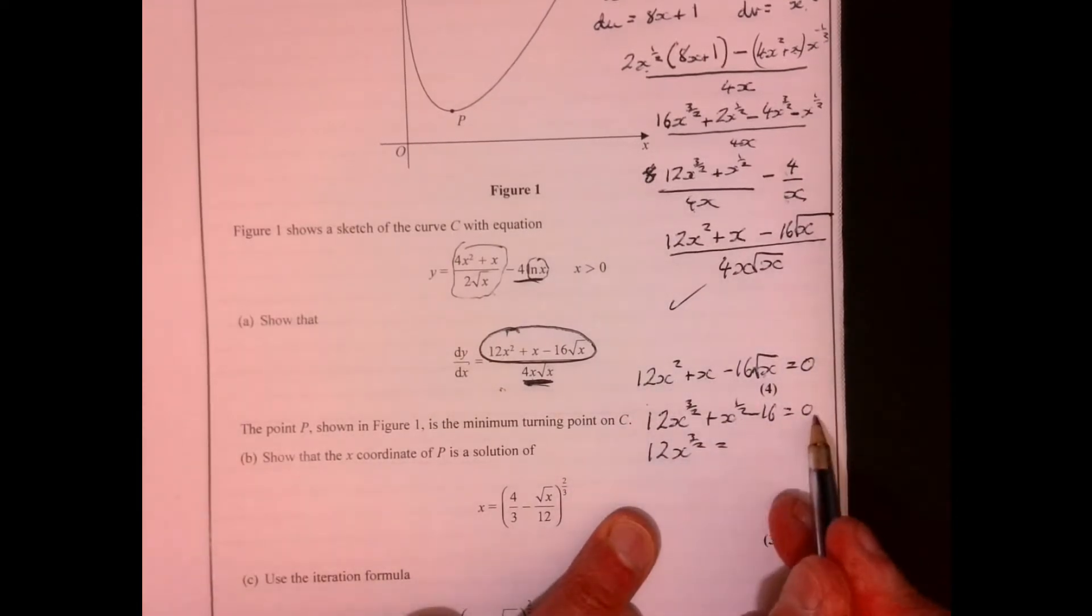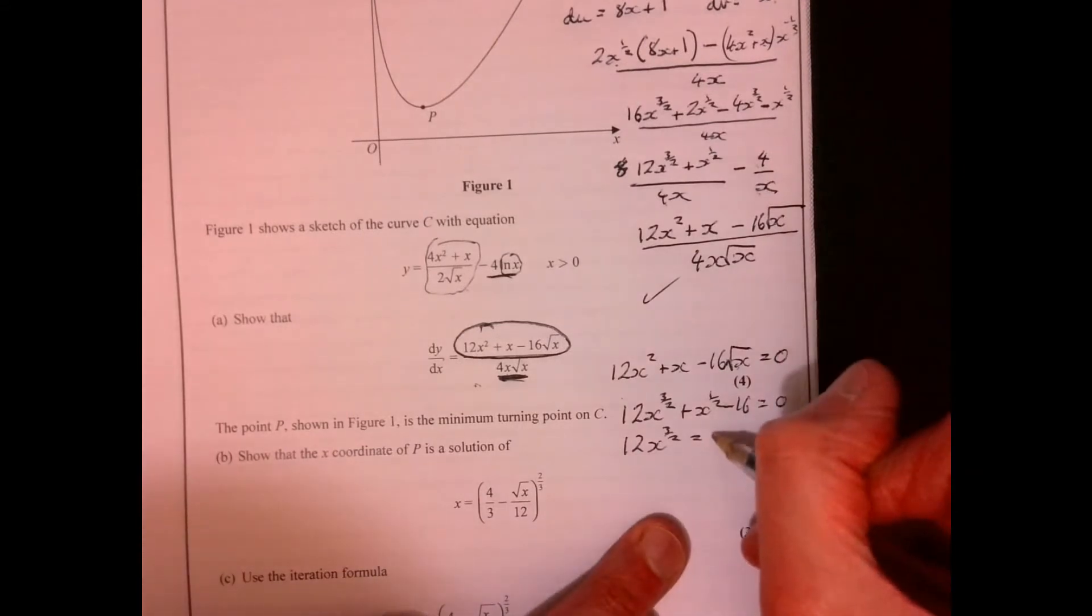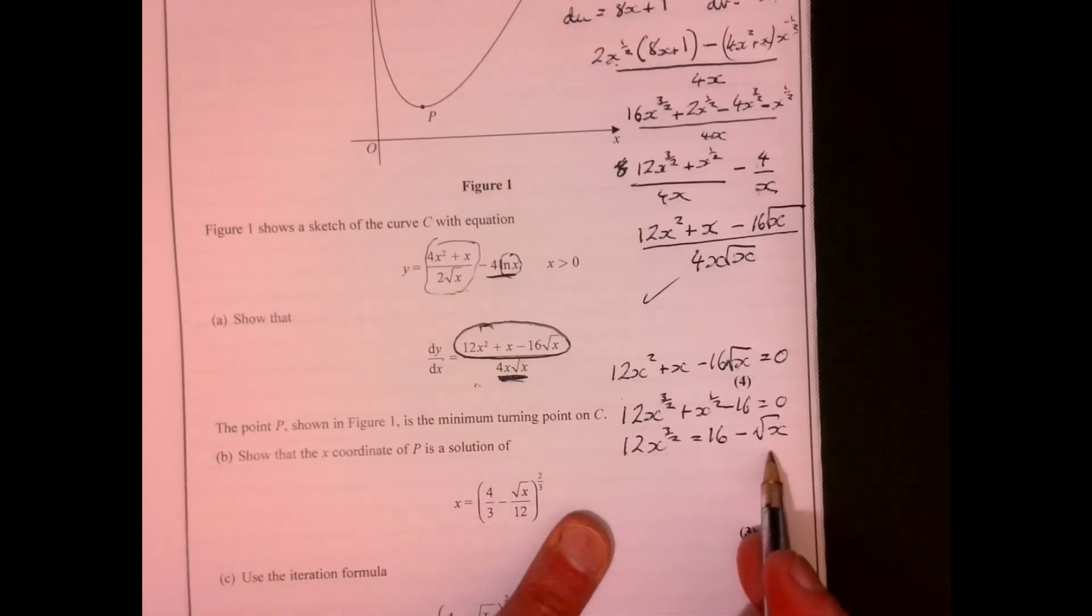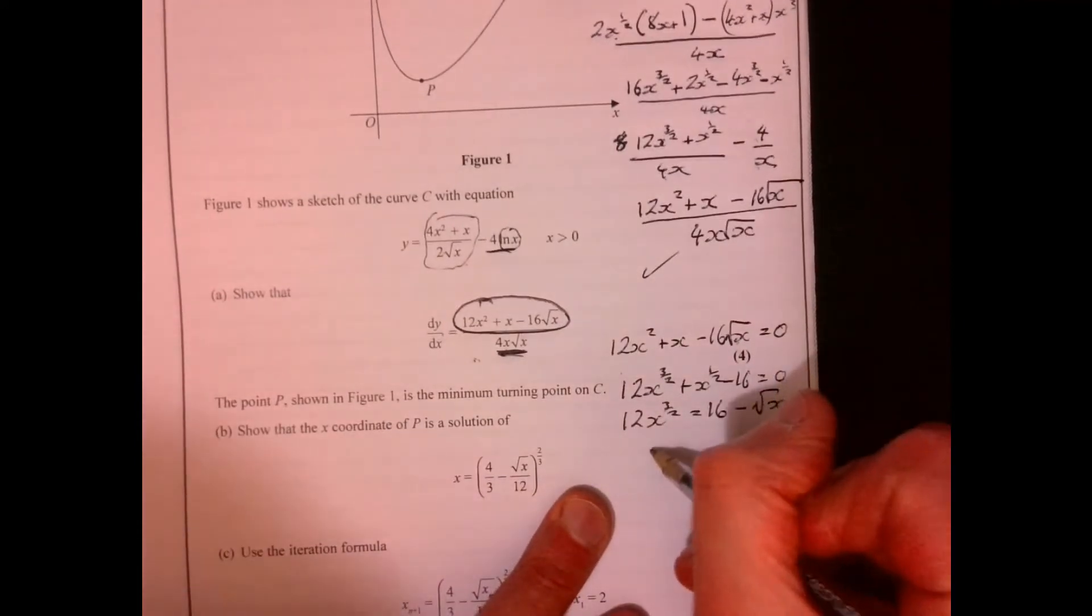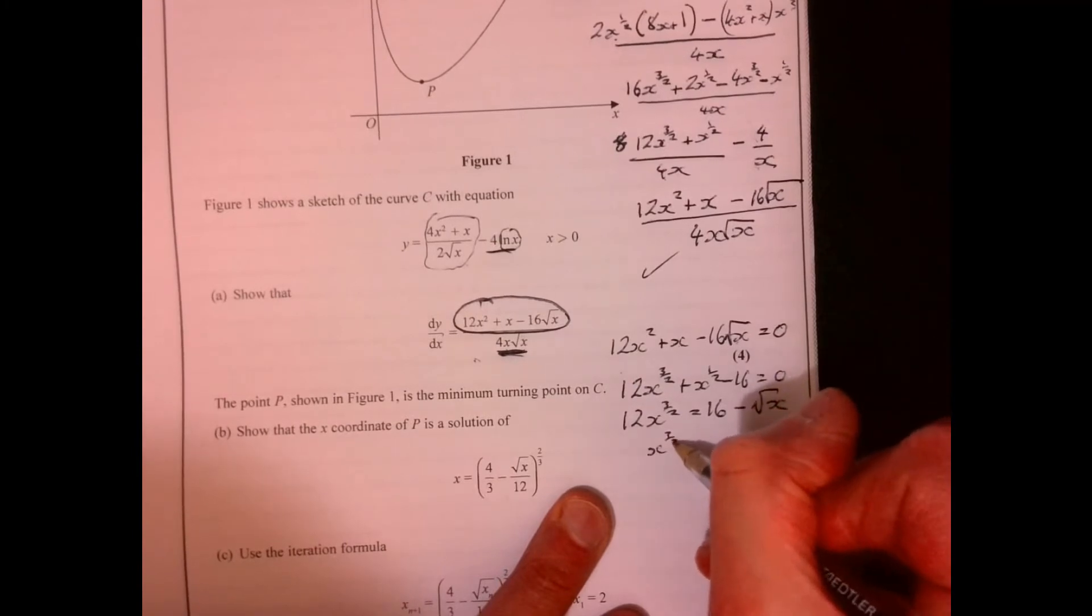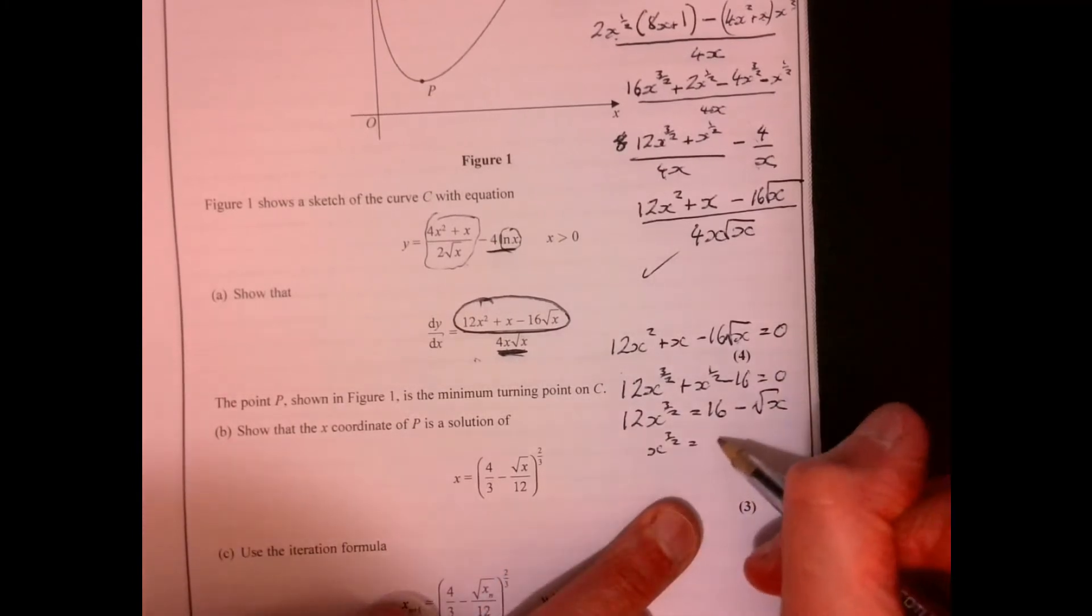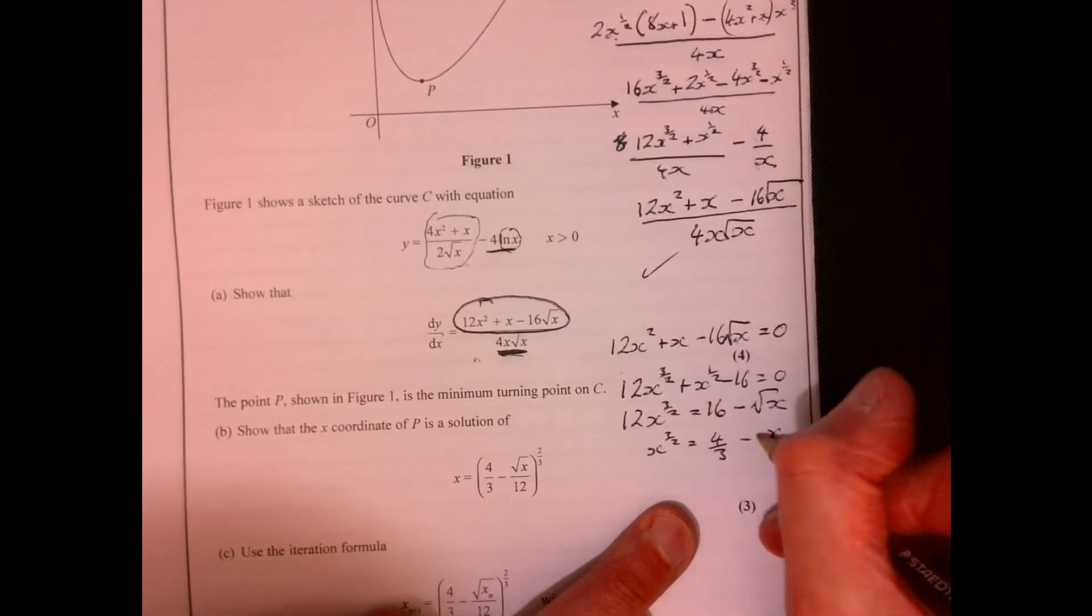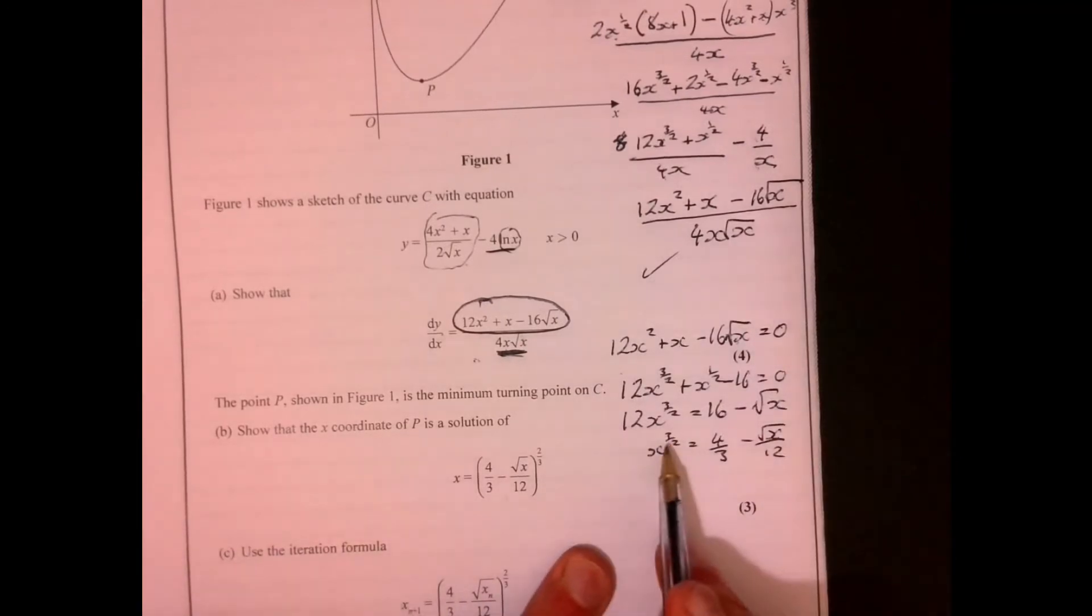Let's give it now. Just taking these two things over to the other side, so that gives me 16 take away root x. I'm going to divide by 12. So that gives me dividing by 12, that's going to give me 4/3 take away root x over 12.